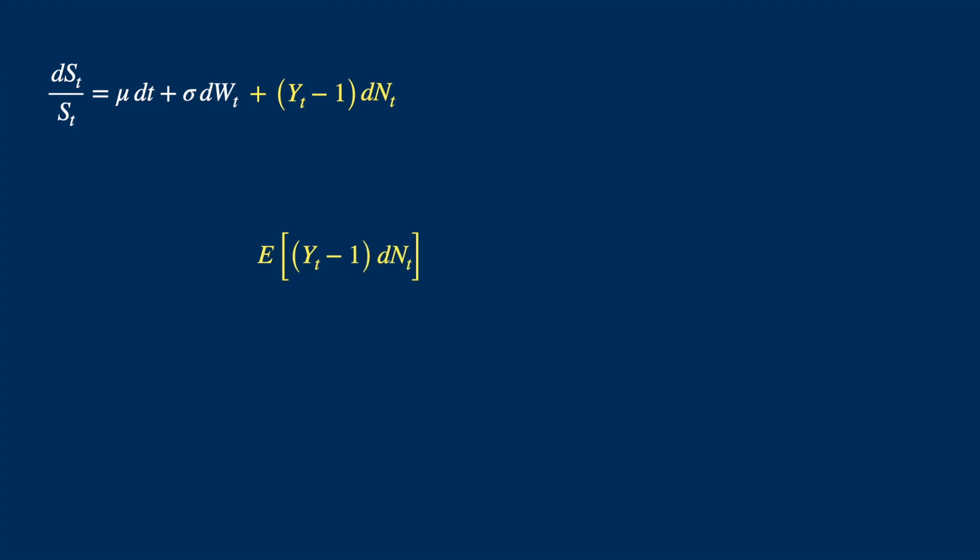As Y and N are independent, we can write expected value of the product as the product of the expected values. Let's represent the expected value of Y minus 1 by K. We shall link it to the parameters later on. And we know expected value of dN is equal to lambda times dt. So the jump adds a drift to the process. And if we subtract this from the process, then the jump component contribution will just be pure random jumps.